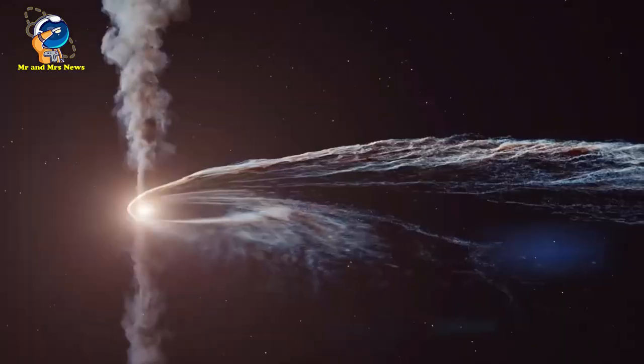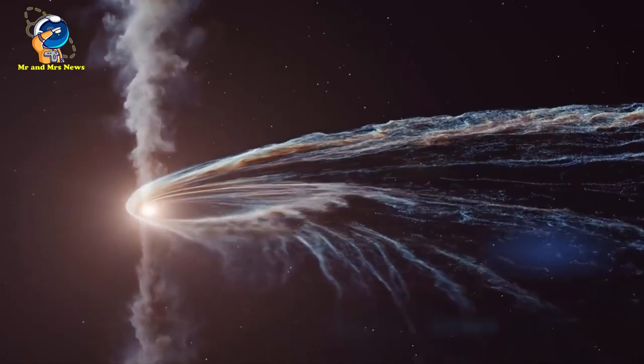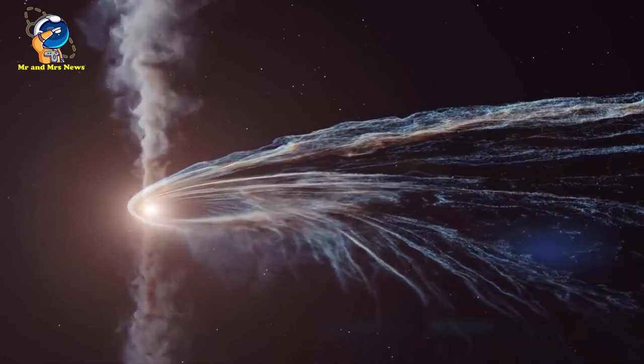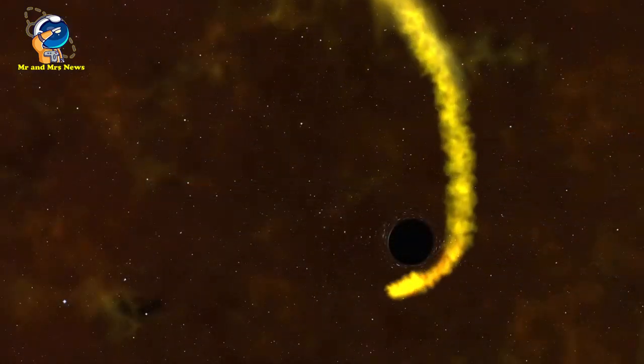Kemudian, lubang hitam mengubahnya menjadi benang panjang seperti mie yang dililitkan erat di sekitar wilayah lubang hitam, seperti spageti di sekitar garpu untuk membentuk bola plasma panas.